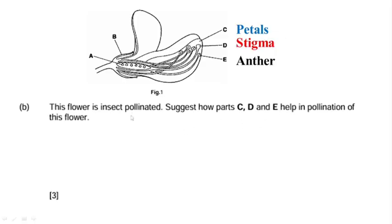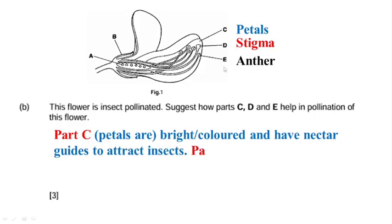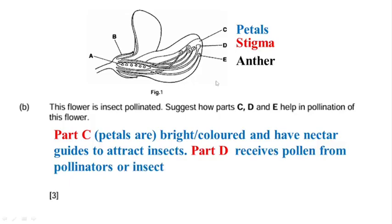So how do these parts help in pollination? The petals are brightly colored and produce nectar, with nectar guidelines that make the flower attractive to insects. The stigma receives the pollen from the pollinator or the insect. The anther produces the pollen, or places the pollen on the insects. So: part C, the petals, are bright colored and have nectar guidelines to attract insects; part D receives pollen from pollinators; part E produces the pollen.